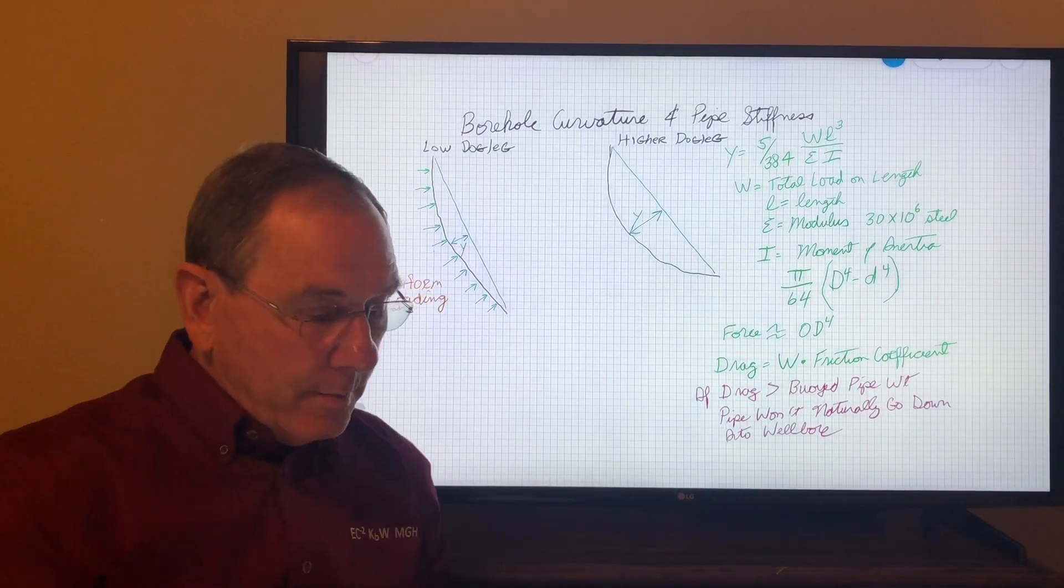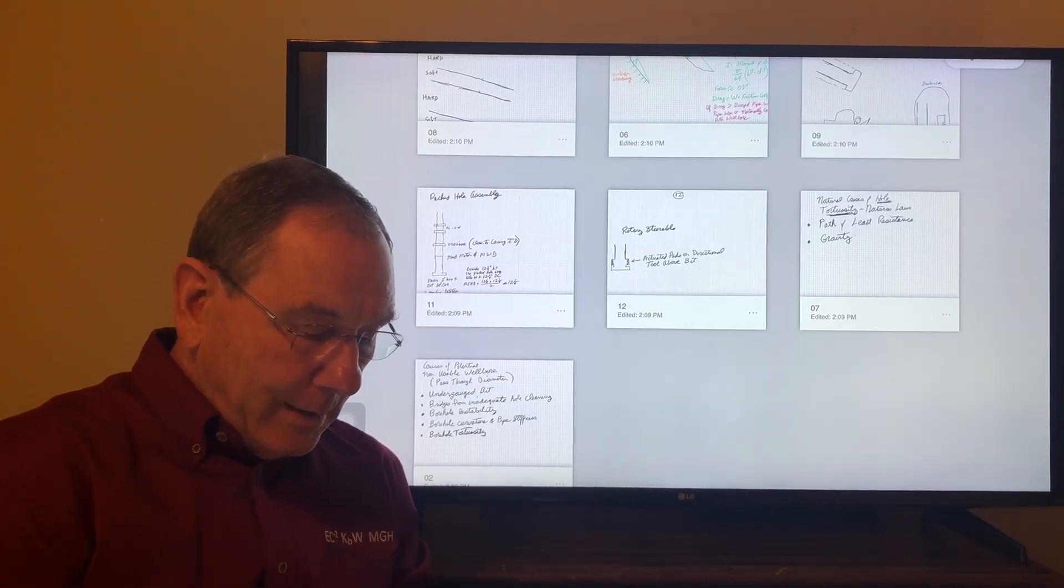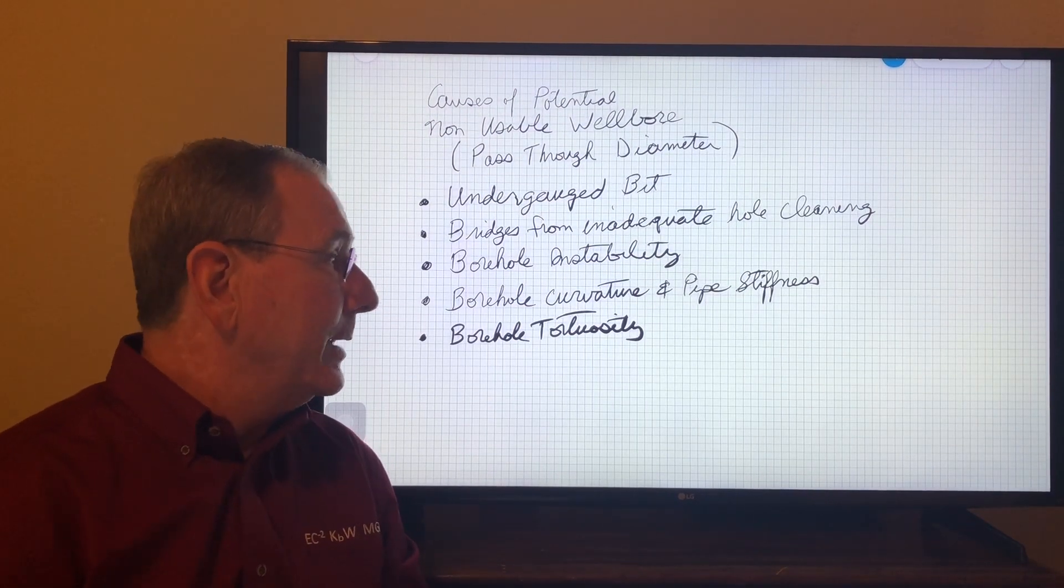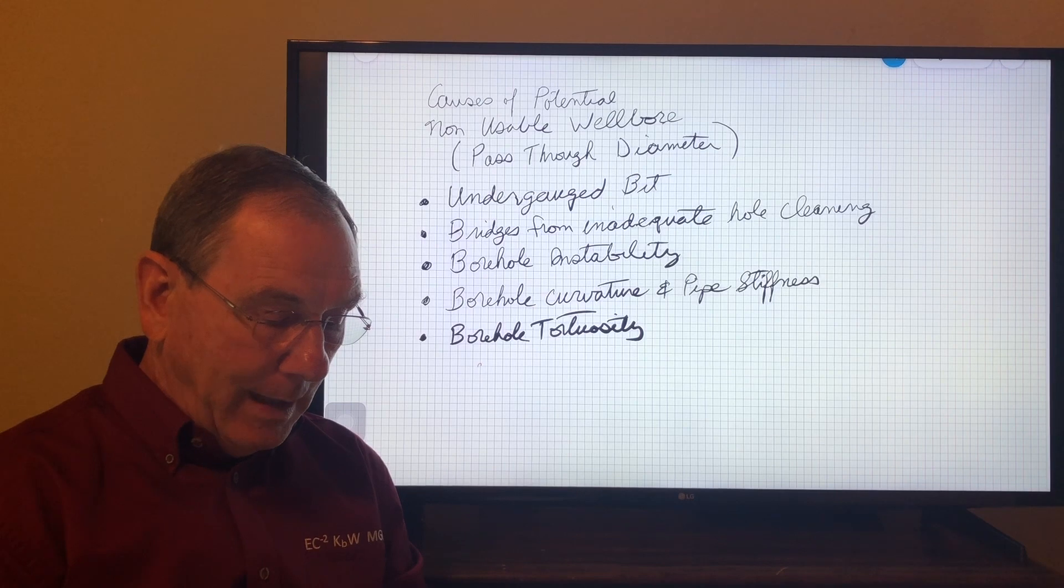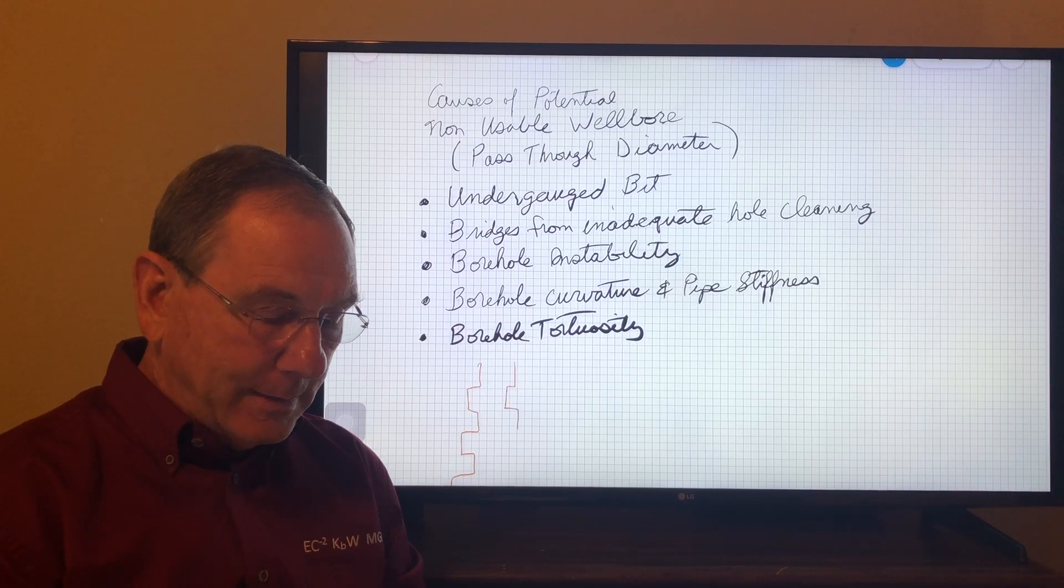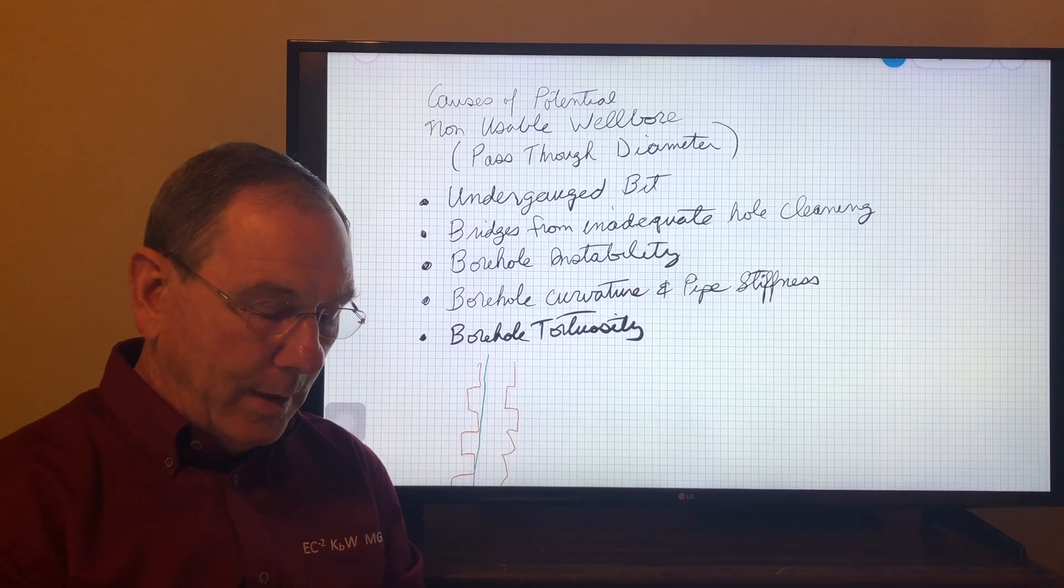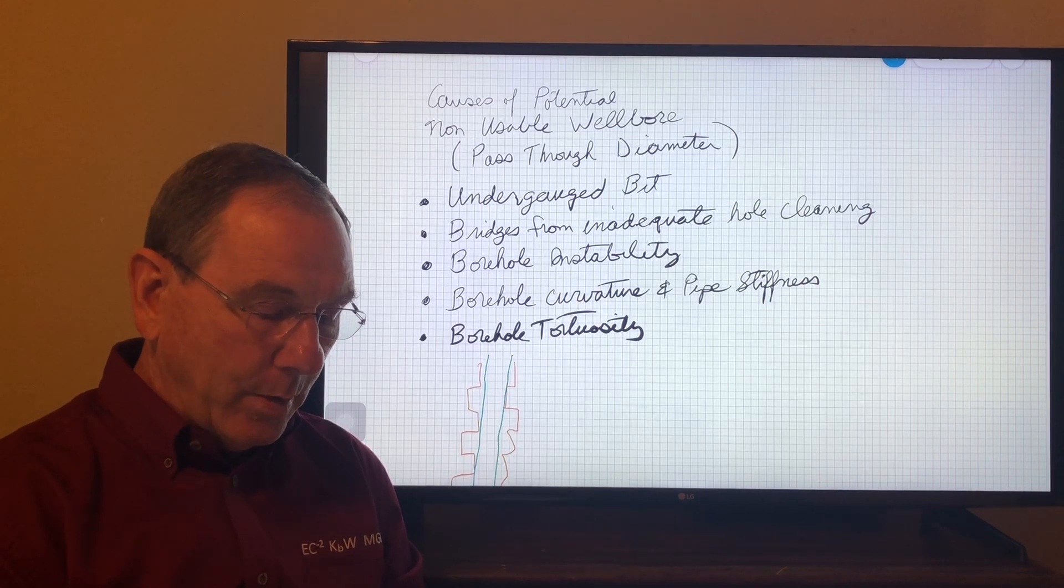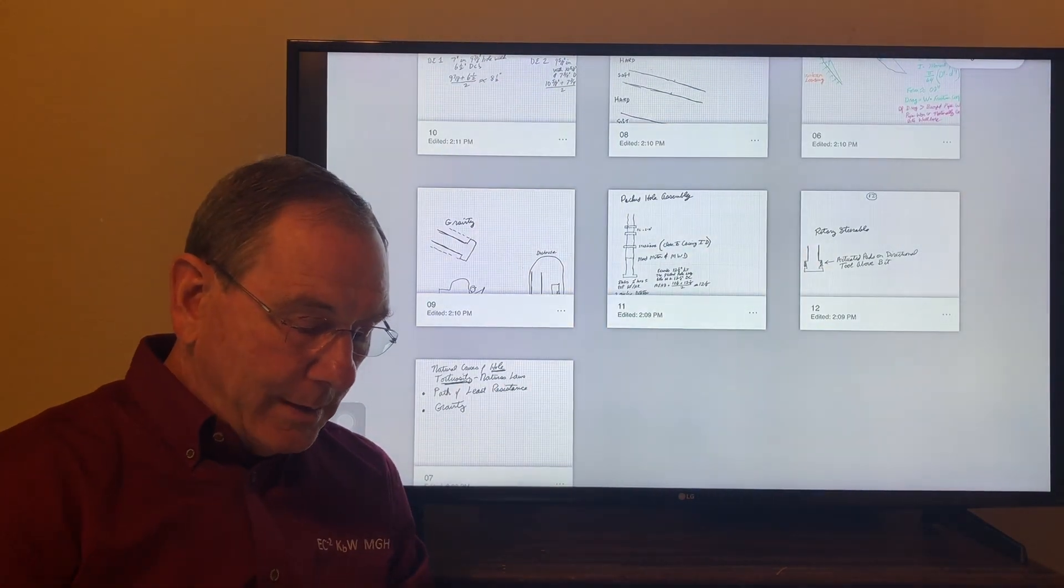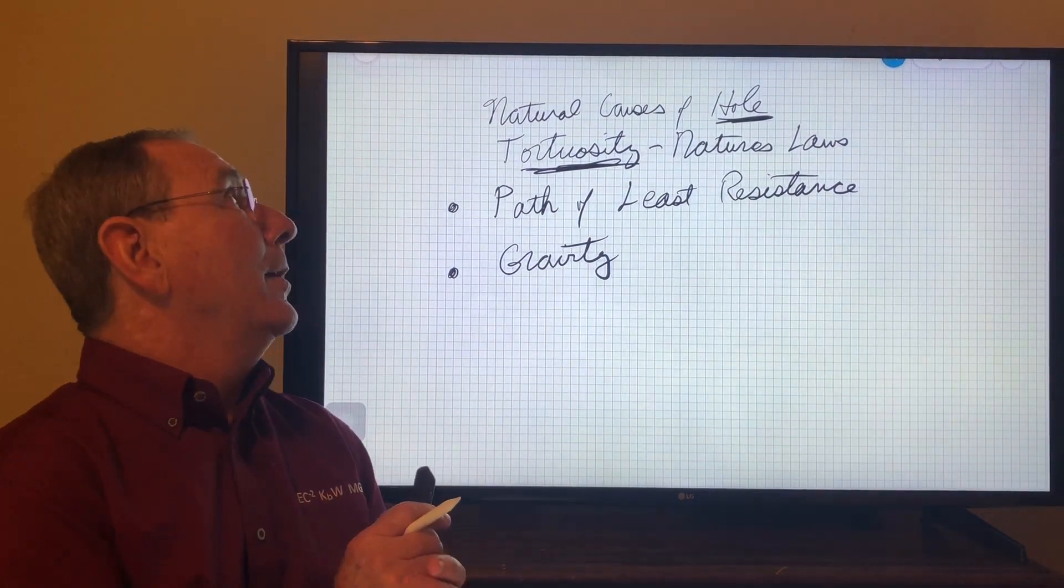The last case is just the borehole tortuosity itself. The way I describe that is our bottom hole assembly can simply move around in the wellbore and end up with a path that's not a smooth wellbore, and the pass-through diameter is not equal to the bit diameter. There are some natural causes that we do not have to do anything for to have a tortuous well path.